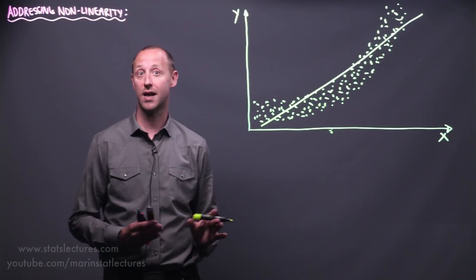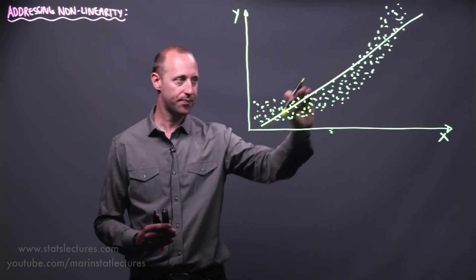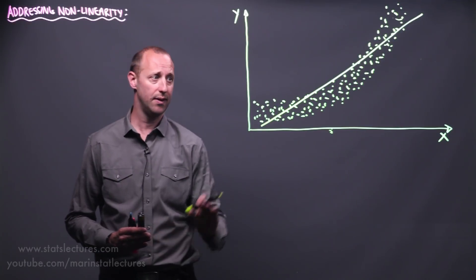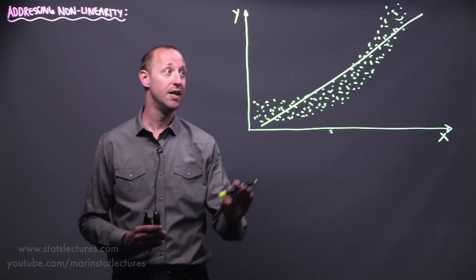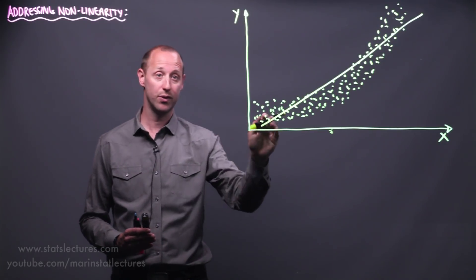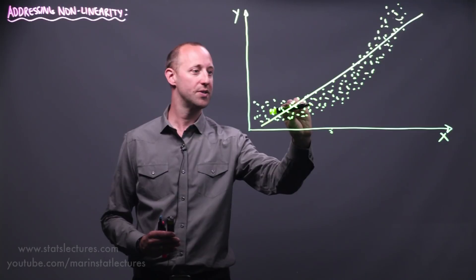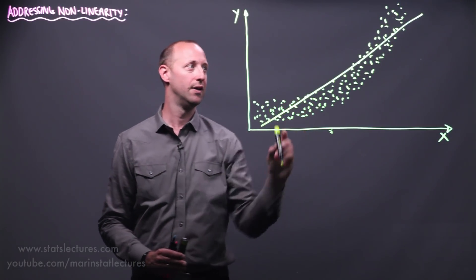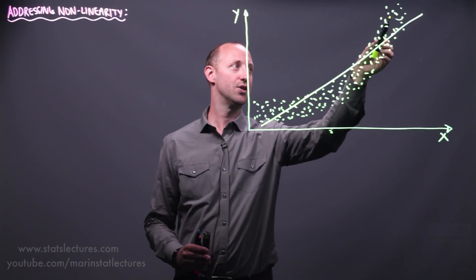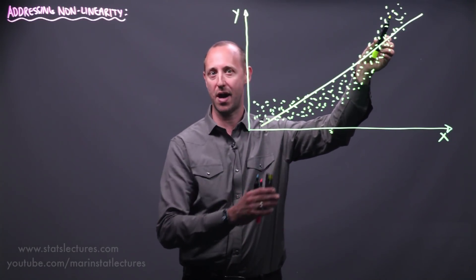If instead we're looking at an effect size model where our goal is really to estimate the slope and interpret that, again the slope is not really a good representation of the relationship between x and y. We can see down here the slope is actually quite smaller. As x increases there's not very much change in y. Here we can see the slope is actually much steeper than this line. As x increases there's a much more dramatic increase in y.